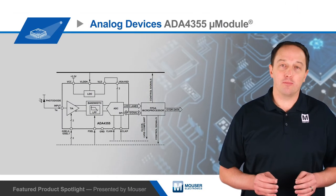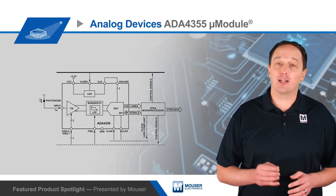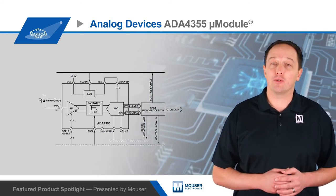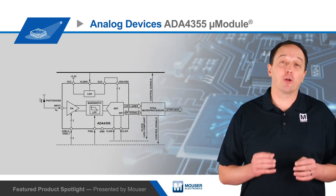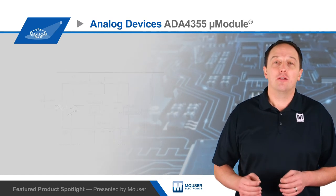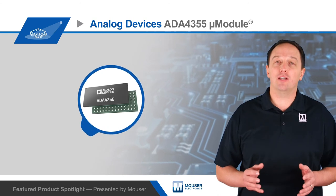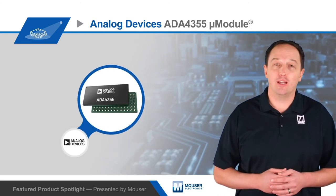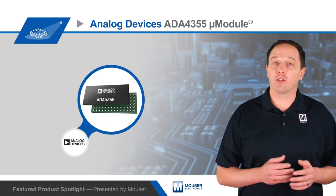The device supports pulse widths down to 10 nanoseconds to detect closely spaced events in time-of-flight and other reflectometry applications, and can detect more closely spaced events using clock phase shifting. It provides data over a serial LVDS output with two lanes at up to 1 gigabit per second per lane, while a SPI interface is used for control.